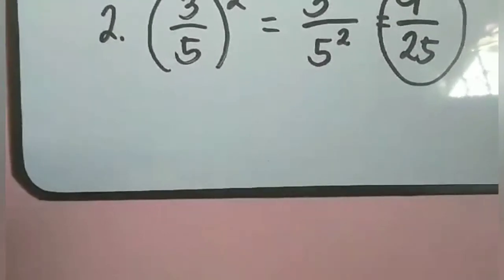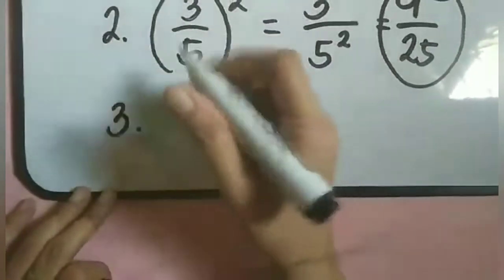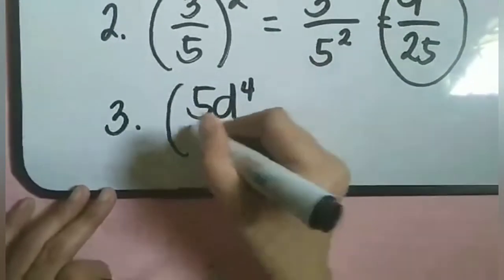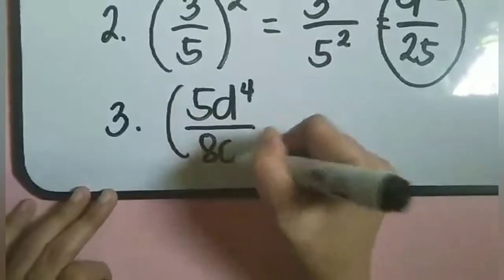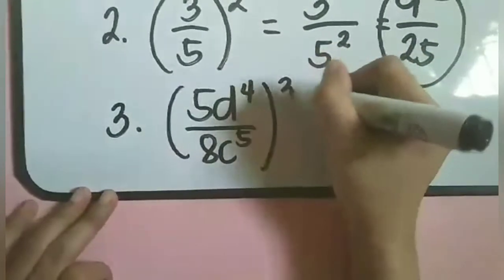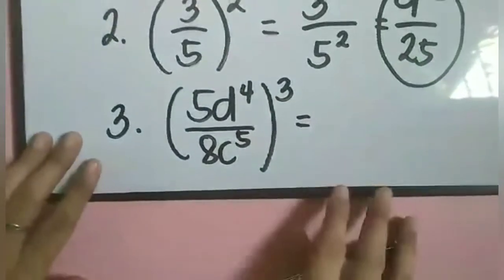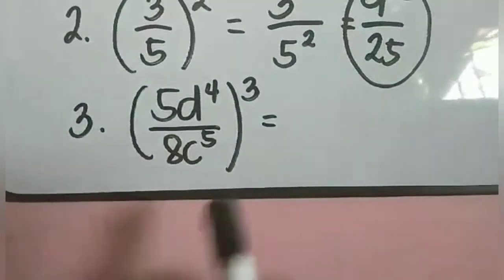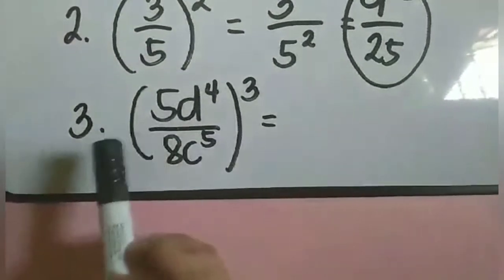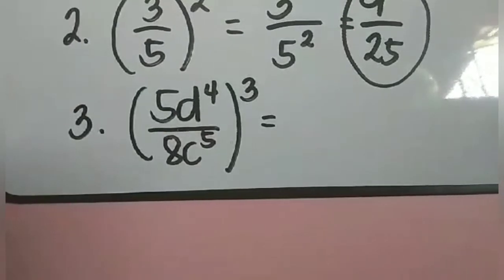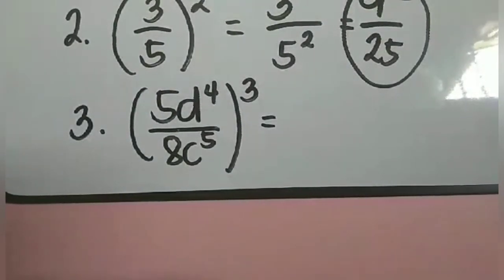Number 3: the quantity 5d raised to 4 over 8c raised to 5, all raised to 3. Medyo mahaba itong given sa number 3. I-distribute natin isa-isa yung exponent sa mga terms dito sa numerator. Pinagsama na itong Power of a Quotient at Power of Power.